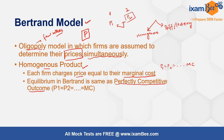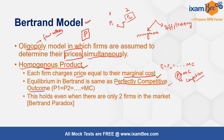Why do firms charge price equal to marginal cost? If one firm charges a price greater than marginal cost, its competitor can reduce the price slightly below that and capture the entire market. In the case of homogeneous products — perfect substitutes — the firm would charge a price equal to marginal cost, and no firm has any incentive to deviate. This holds even with as few as two firms, which is why it is called the Bertrand paradox.